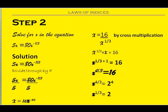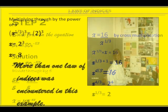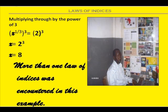In the next slide, you'll see the completion of this example. The powers are redistributed by multiplying through by the power of 3, giving x equals 2 raised to the power 3, which is the same as x equals 8. You'll notice in this example that more than one law of indices was encountered in the solution.